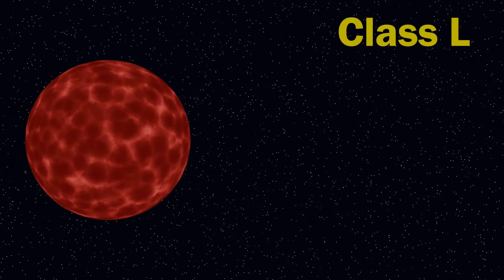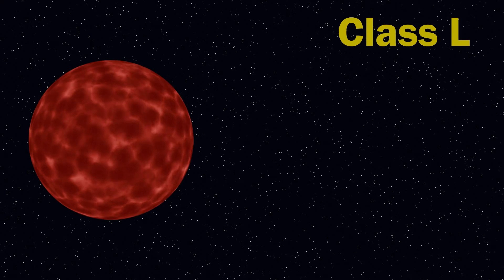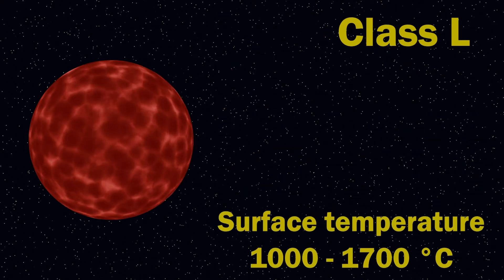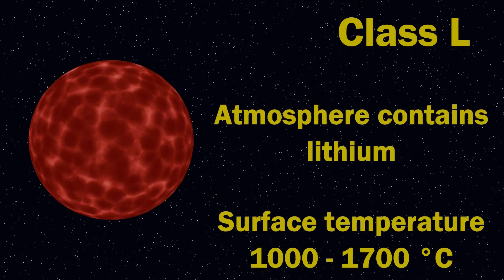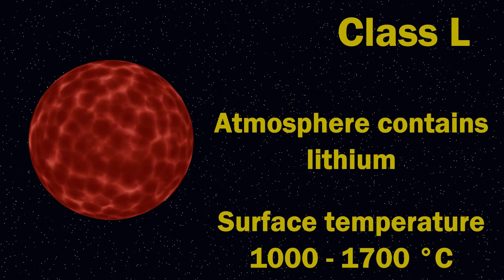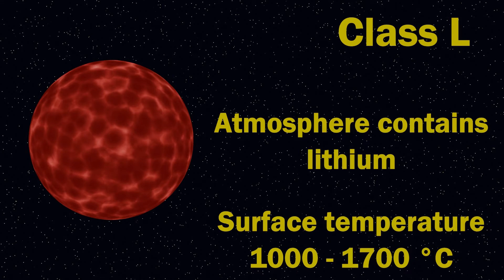Next, we have the Class L brown dwarfs, and again, there's some crossover here between brown dwarfs and the smallest and coolest stars. These are cooler than Class M brown dwarfs, and as a result, shine only very dimly. The radiation they emit is mainly infrared, but also some visible red light. Their surface temperature is in the range of about 1,000 to 1,700 degrees Celsius.